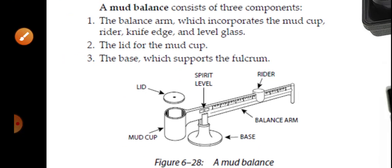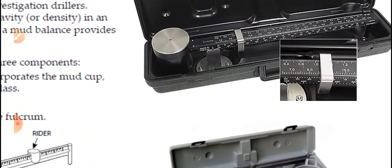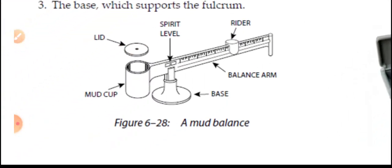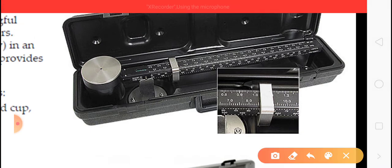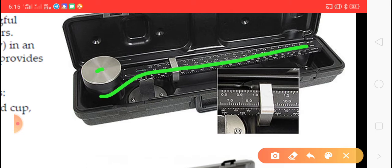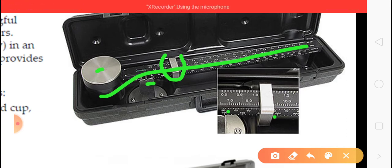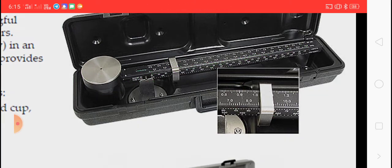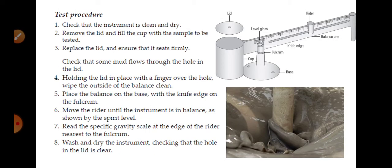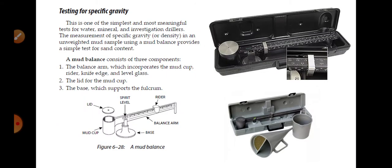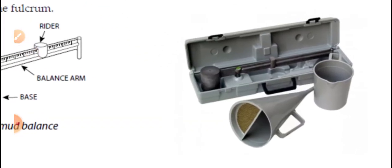Here are the main parts of the mud balancer. This is the actual mud balancer. You see here, this is the lid, this is the arm incorporated with the mud cup, this is the rider, this is the pivotal, and these are the readings and graduations. This is the actual mud balancer and these are the components we need before checking the mud weight cup.